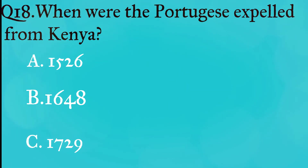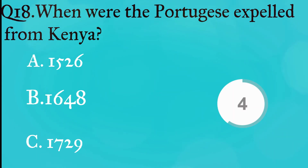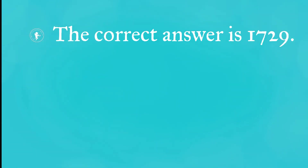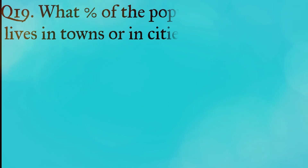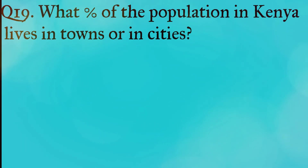Question 18: When were the Portuguese expelled from Kenya? A: 1526, B: 1648, C: 1729. The correct answer is 1729.